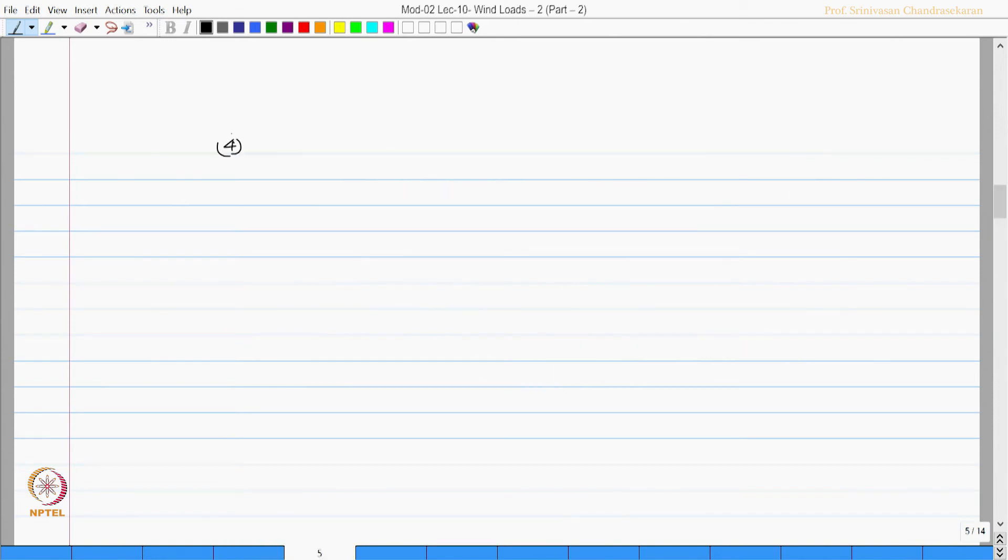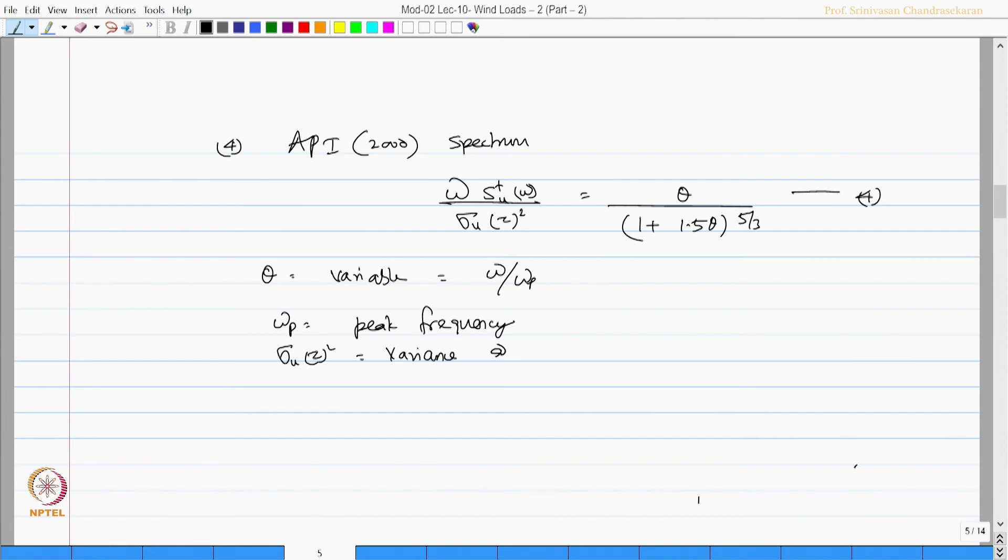Next spectrum what we have in the literature is given by American Petroleum Institute API spectrum. The governing equation is now given in the screen. Again theta is the variable which is omega by omega p. Omega p is the peak frequency.